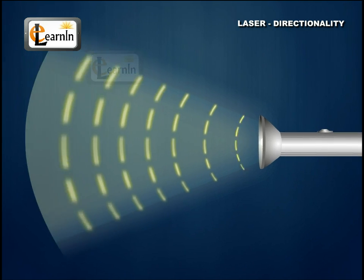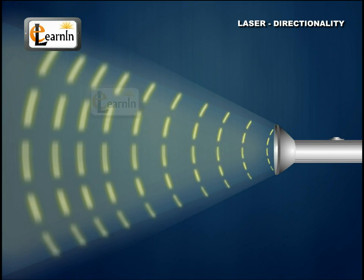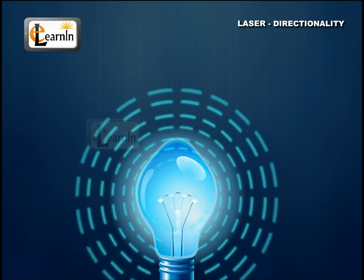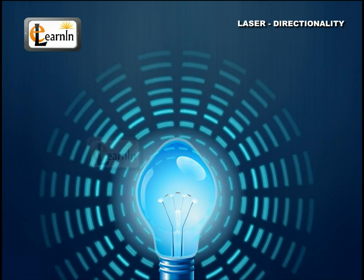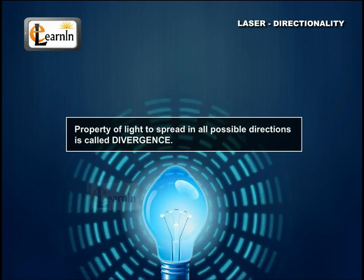When you switch on a torch or a lamp, the light is emitted in all directions. Similarly, the light from all conventional sources, like an electric bulb, disperses in all possible directions. This property of light to spread in all possible directions is called divergence.